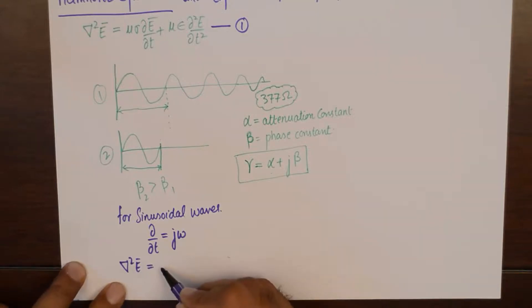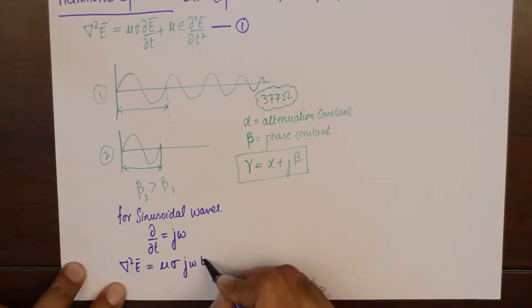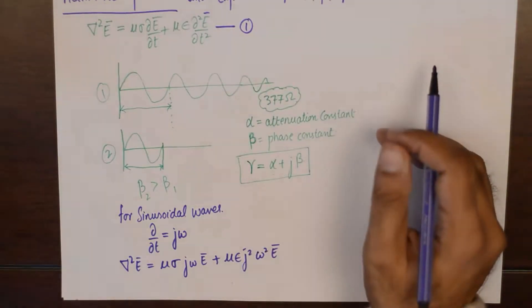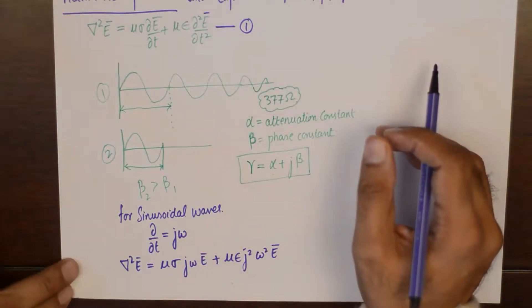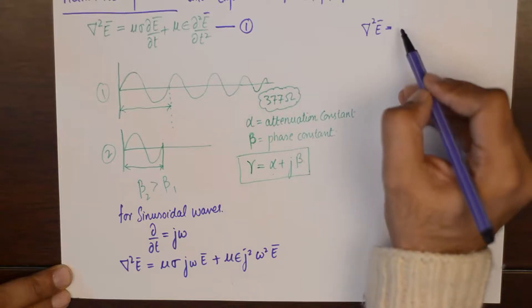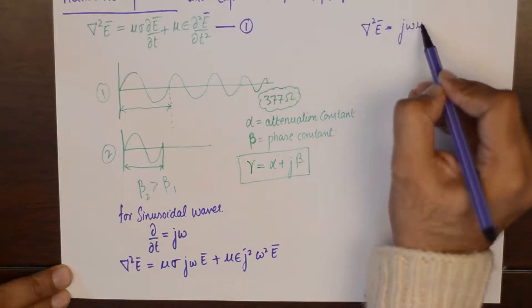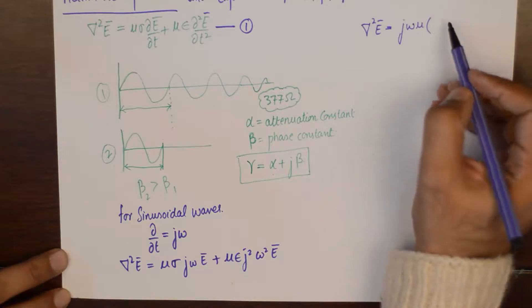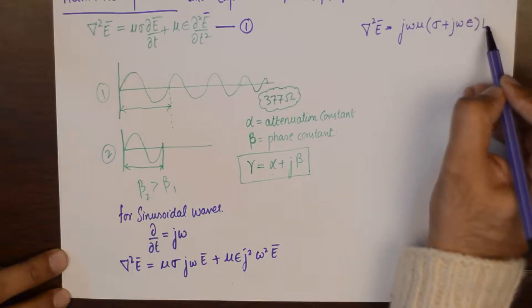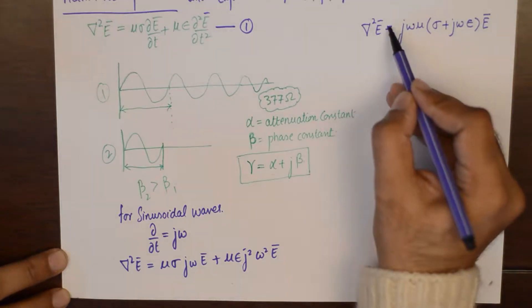Omega is that one thing that introduces the component for a sinusoidal propagation. The angular velocity is that component. So when we substitute this in our characteristic wave equation for any lossy medium, what we get is del squared E equals mu sigma j omega E plus mu epsilon j squared omega squared E. And a little bit of rearrangement gives us del squared E equals j omega mu as a common term and then sigma plus j omega epsilon multiplied by E.